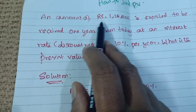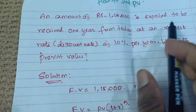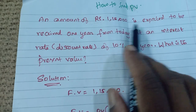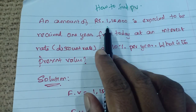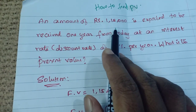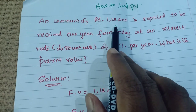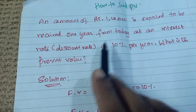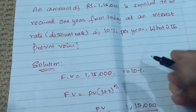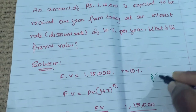The given particulars: an amount of rupees one lakh fifteen thousand is expected to be received at a future date. In the future, I will be receiving an amount of one lakh fifteen thousand, and I need to find the present value of that amount. This uses the compound interest formula.